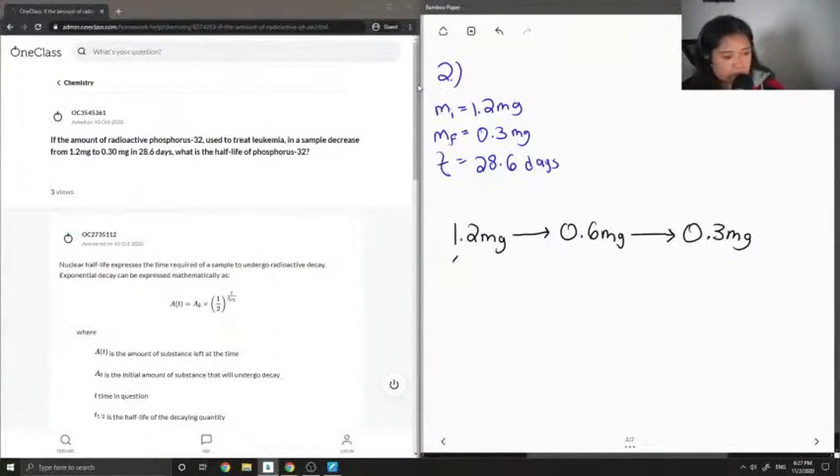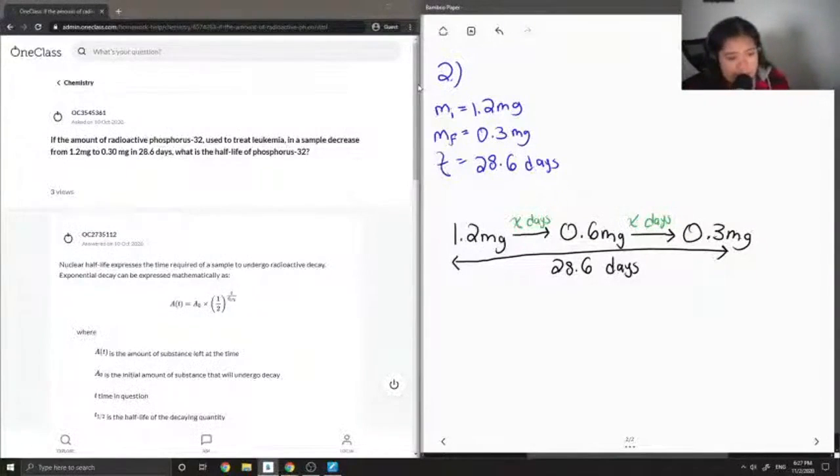And we know that this whole process took 28.6 days. So all we have to do is find out how many days it took for the phosphorus to get to 0.6 mg, and similarly, it should be the same amount of days that it took to get to 0.3 mg.